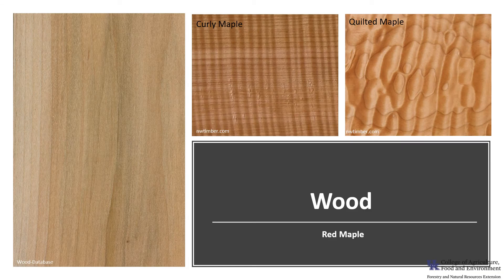The wood of red maple resembles sugar maple but is softer in texture and not as heavy. Red maple is considered a soft maple, while sugar maple is considered a hard maple. The sapwood of the red maple is most commonly used for lumber rather than the heartwood. Sapwood color ranges from almost white to a light golden or reddish brown, while the heartwood is a darker reddish brown. Red maple can also be seen with curly or quilted grain patterns.